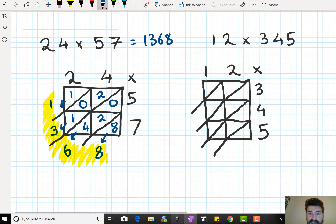2 times 3 is 6. So, there isn't any tens. So, that's 0, 6. 2 times 4 is 8. So, no tens. And then 8. 2 times 5 is 10. So, we've got 1 in the tens. 0 in the ones. Now, 1 times 3. Well, that's simple. Anything times 1 is itself. 3. 1 times 4 is 4. And 1 times 5 is 5.